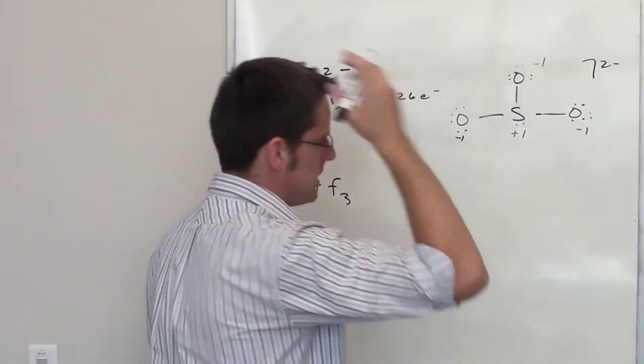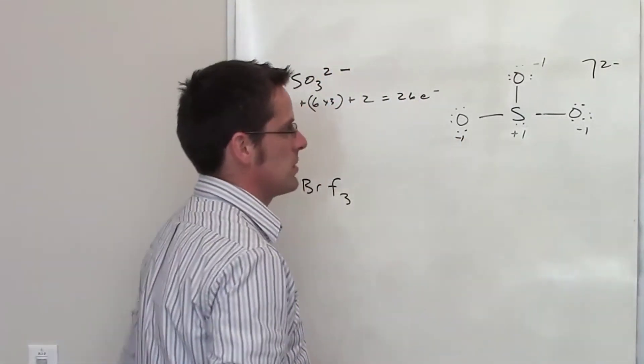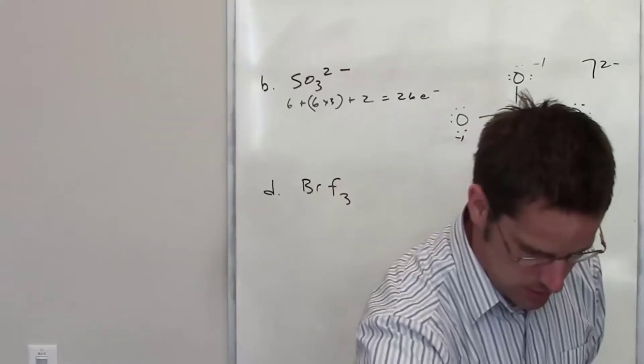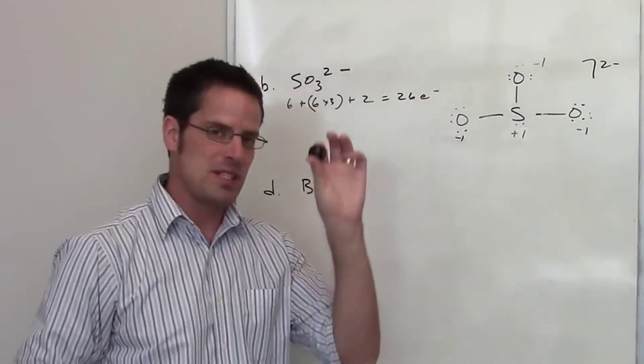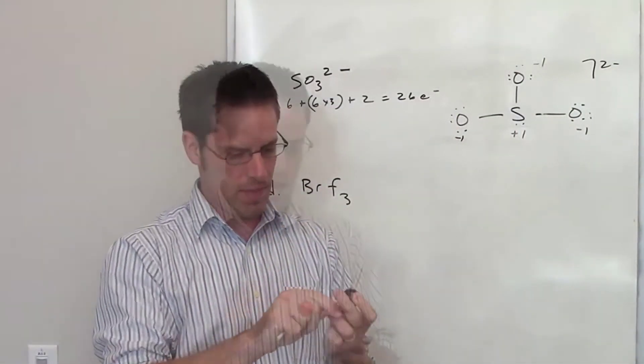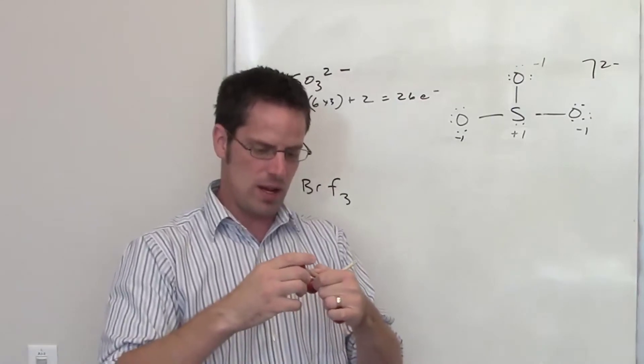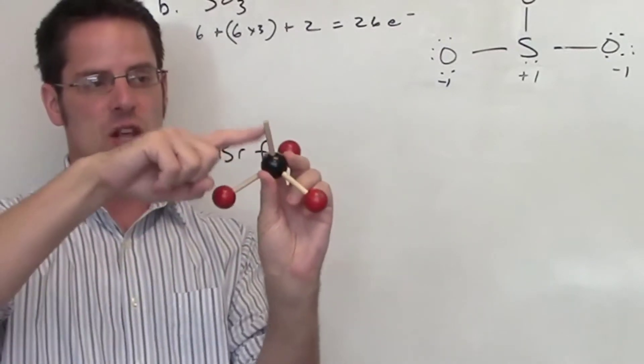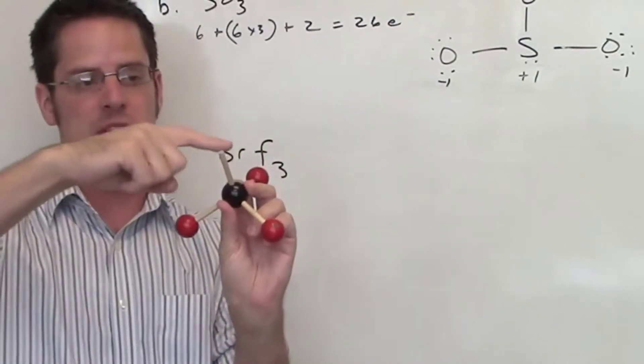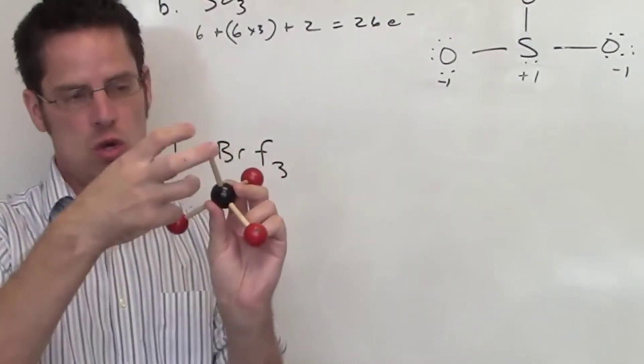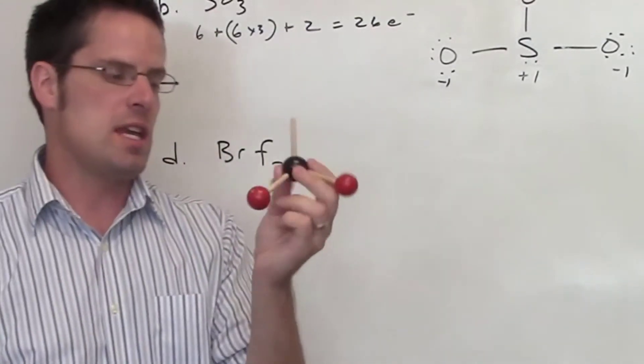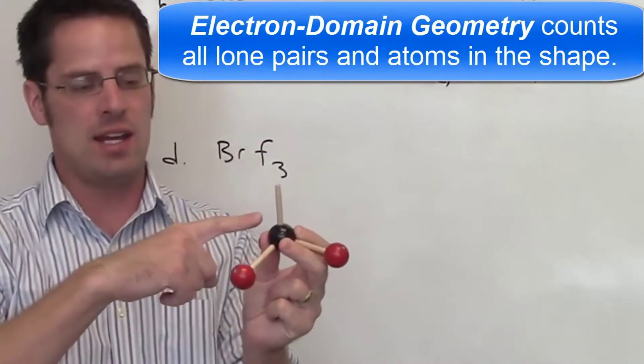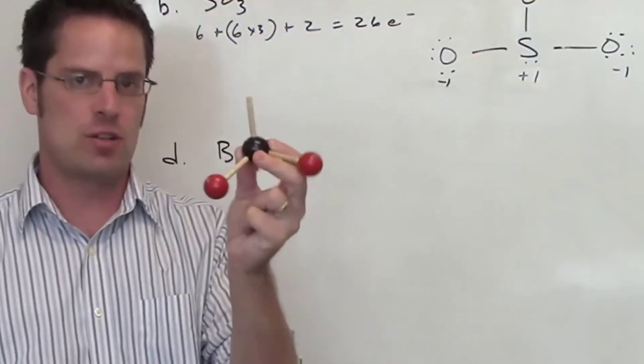So we now need to determine the molecular and electron domain geometries. In this particular case, it's going to be the same either way. I've got four different groups around the sulfur. I'm going to go ahead and assemble a model. I'm going to pretend this black sphere represents my sulfur. The sulfur has three oxygens around it, and one set of lone pairs. So in this rudimentary model, I've got three oxygens, and this lone pair represents two electrons floating up here that are not bonded to any atom. So the full electron domain geometry, that's where I can include everything, including the lone pairs, is tetrahedral.